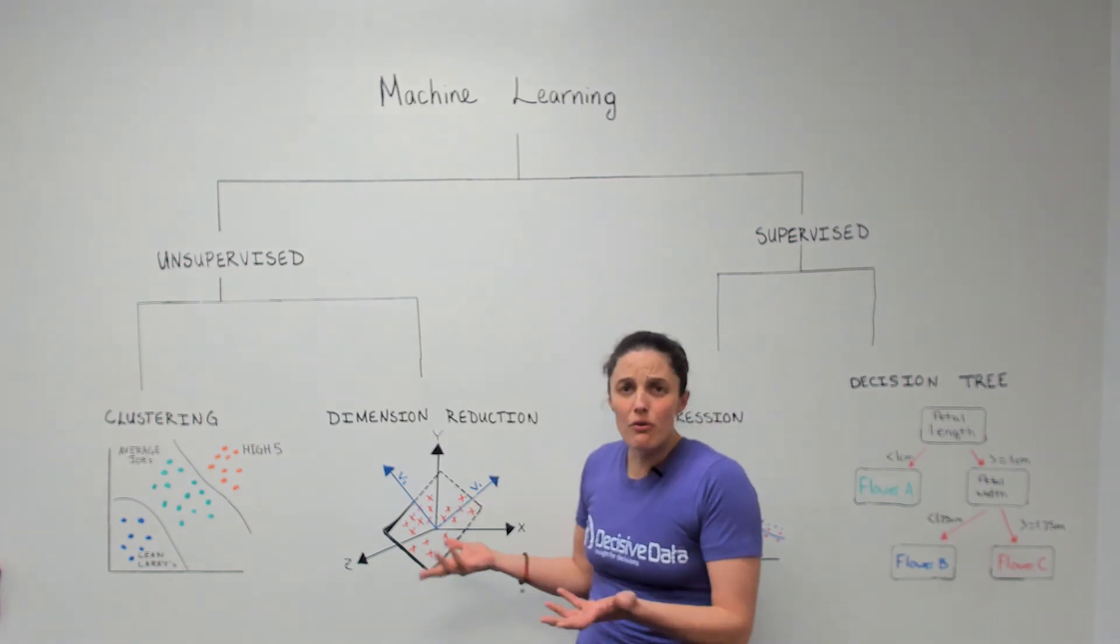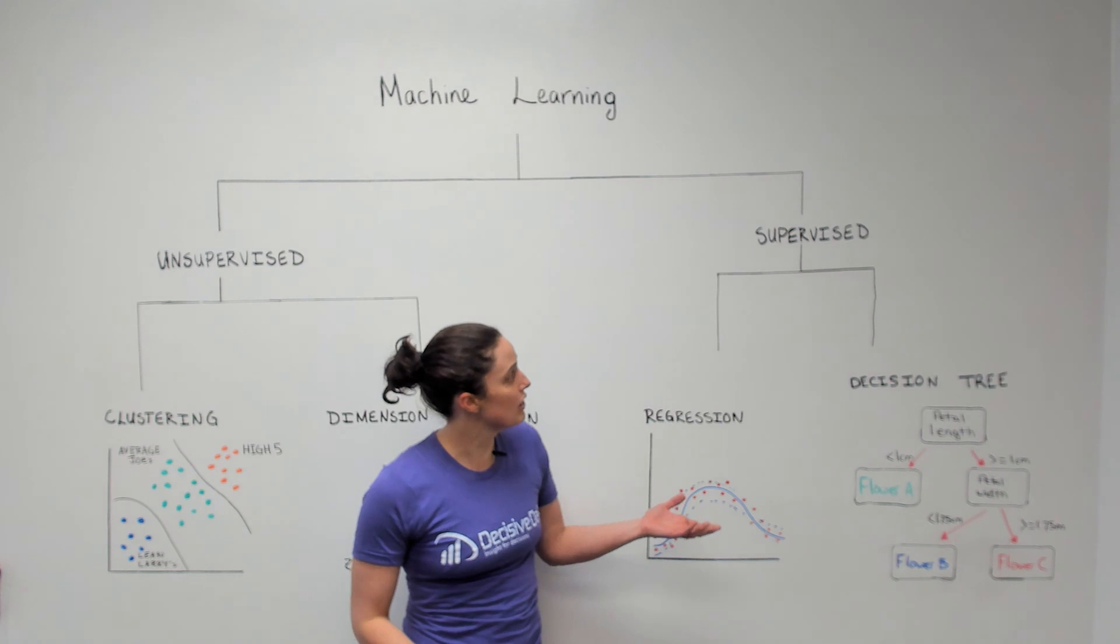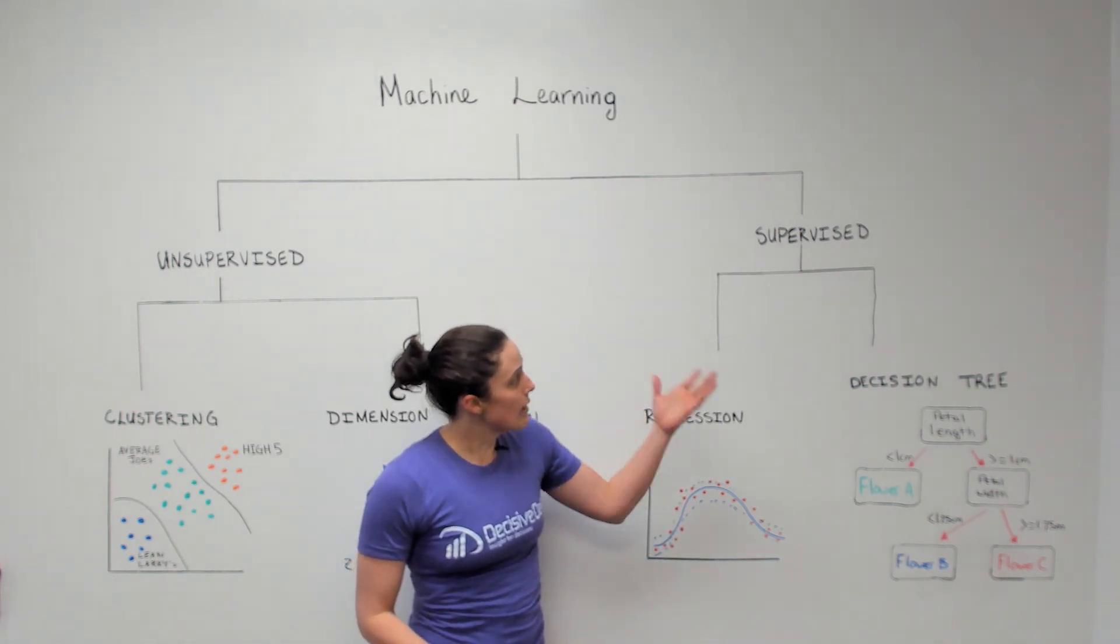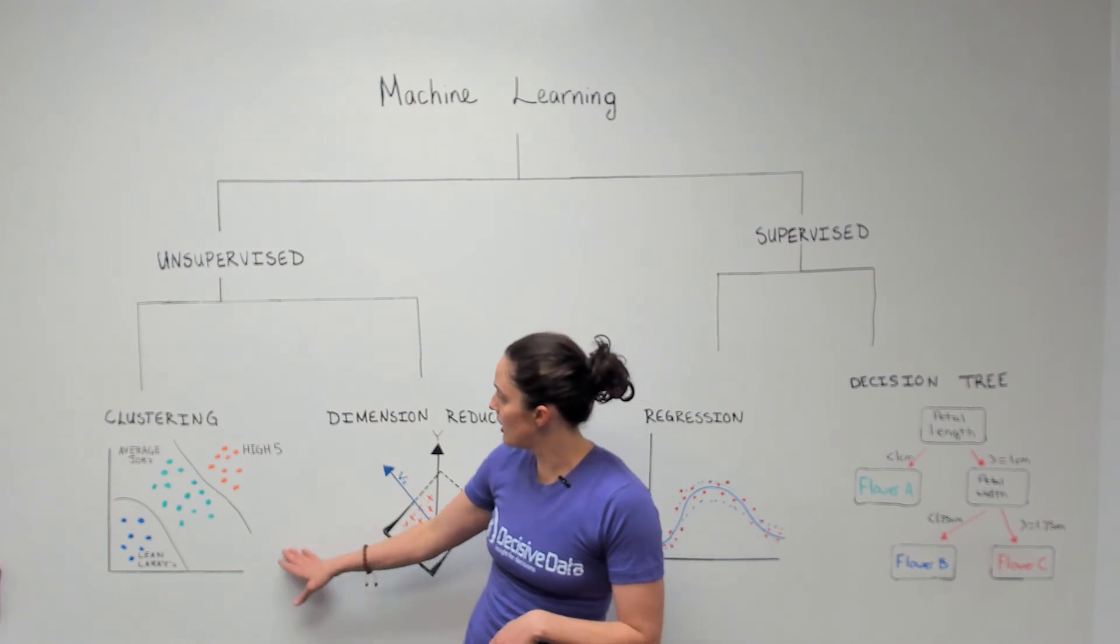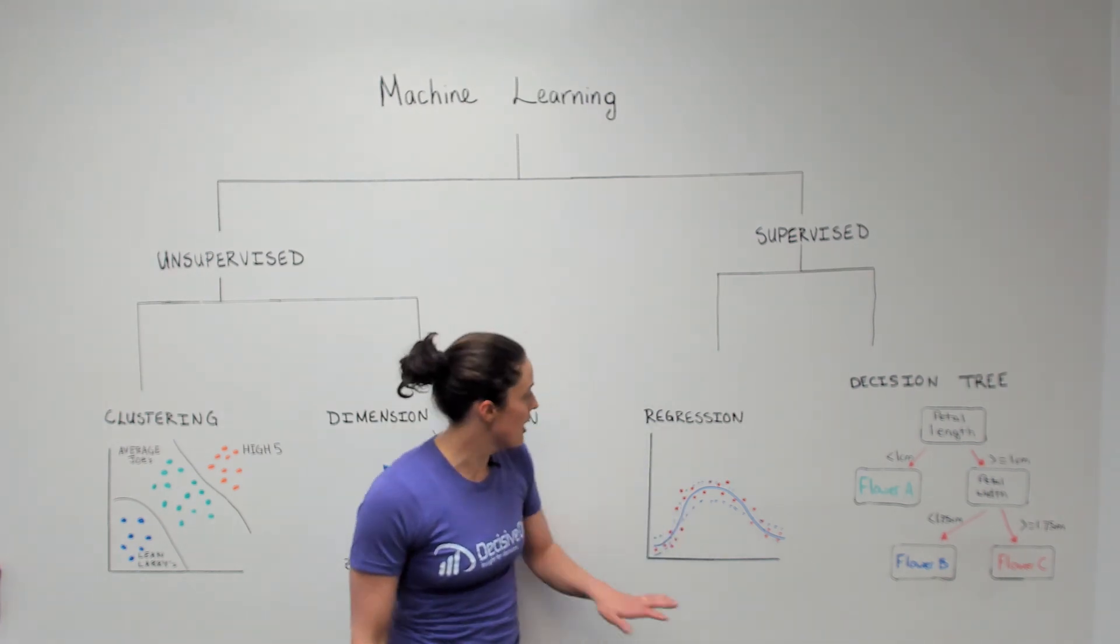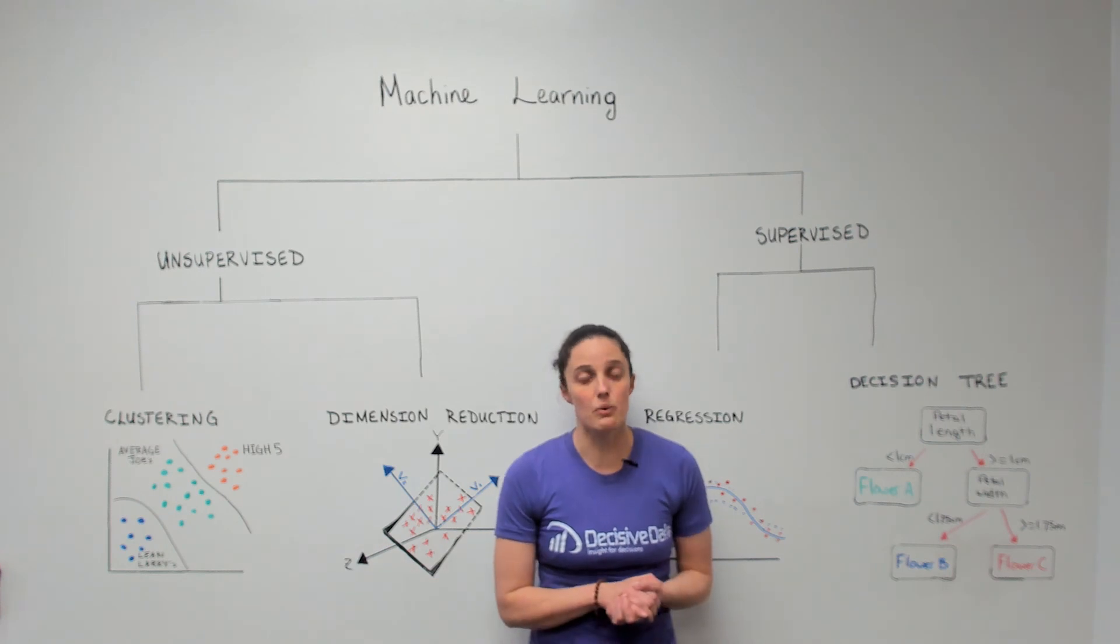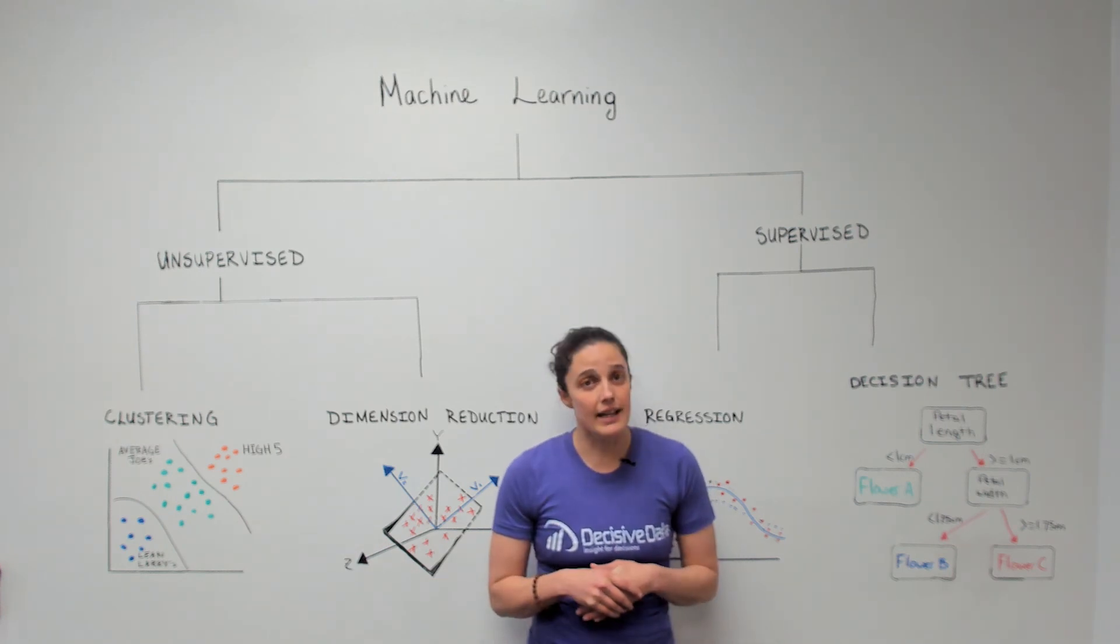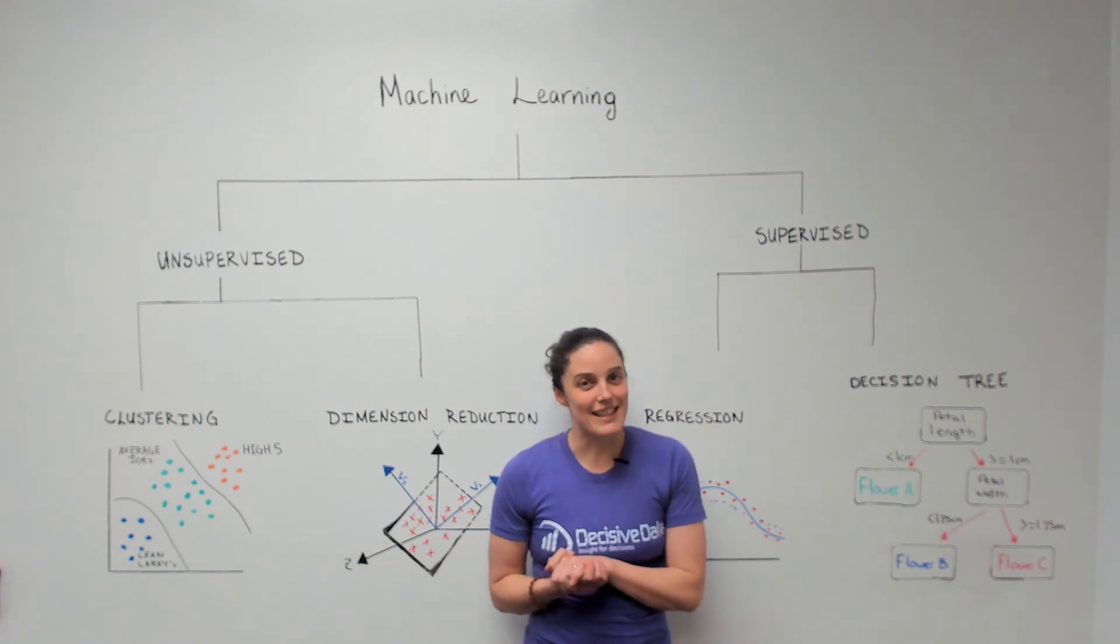That's the general overview of machine learning. We're talking about unsupervised and supervised machine learning where we have labeled data to work with, we have unlabeled data to work with, we can do clustering, dimension reduction, regression, and decision trees. There's lots of other things that we can do with machine learning and data science. And thanks for joining me today. My name is Tessa Jones with Decisive Data.